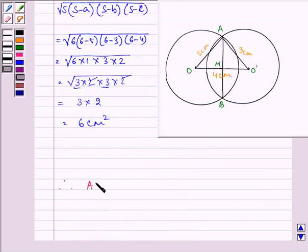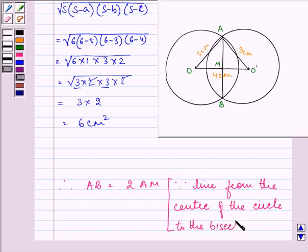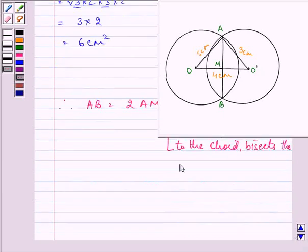We can write that AB is equal to twice the length of AM because the line from the center of the circle, OM, is the line from the center of the circle to the chord AB. So that means it will be bisecting it.